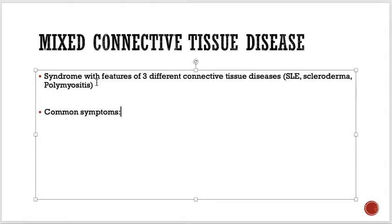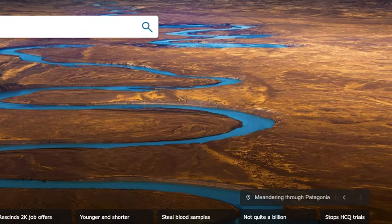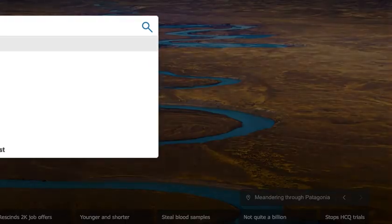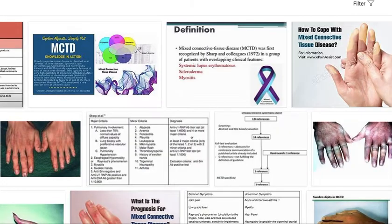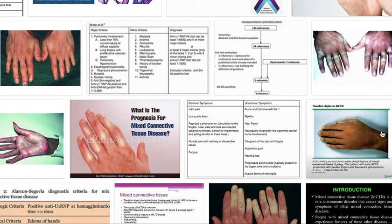Most of them have Raynaud's phenomenon and swollen fingers. In basic exams, I have never seen a question asked about mixed connective tissue disease. In MCTD, photos typically show features of Raynaud's phenomenon or swollen fingers — you can see the fingers are swollen.